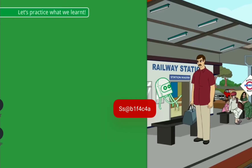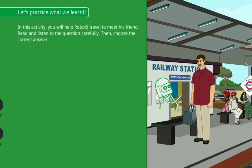Let's practice what we learnt. In this activity, you will help RoboQ travel to meet his friend. Read and listen to the question carefully. Then, choose the correct answer. How will RoboQ ask when the next train is coming?